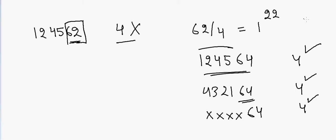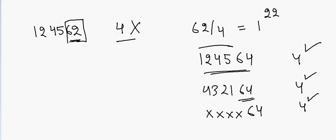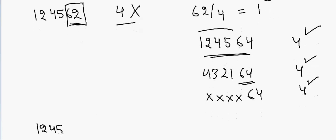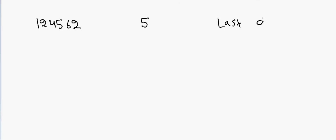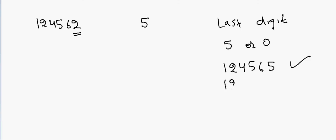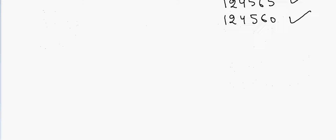Let's write the number again: 124562. Is this number divisible by 5? No, because for divisibility by 5 the last digit must be either 5 or zero. In this case it's 2, so it is not divisible by 5. If we had 124565 or 124560, it would be divisible by 5, but not in this case.